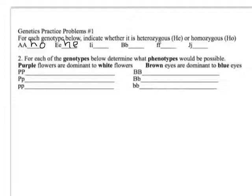Uppercase I, lowercase i is heterozygous. Uppercase B, lowercase b is heterozygous. Lowercase-lowercase f is homozygous and shows the recessive trait. Remember: dominant trait is an uppercase letter, recessive trait is a lowercase letter. Uppercase J, lowercase j is heterozygous.